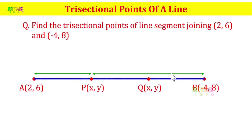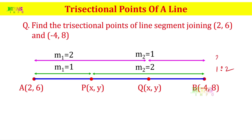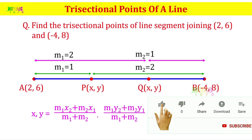In the first case, we have a ratio of 1 is to 2. So M1 is equal to 1 and M2 is equal to 2. In the second case, 2 is to 1. So M1 is equal to 2 and M2 is equal to 1. The section formula is: x, y is equal to M1 into x2 plus M2 into x1 by M1 plus M2, comma M1 into y2 plus M2 into y1 by M1 plus M2.